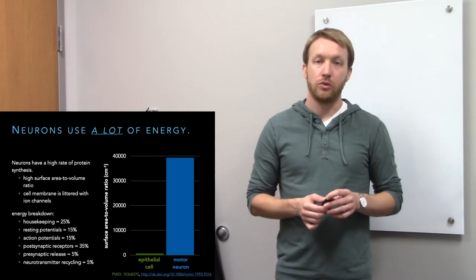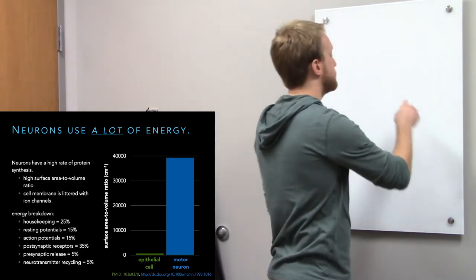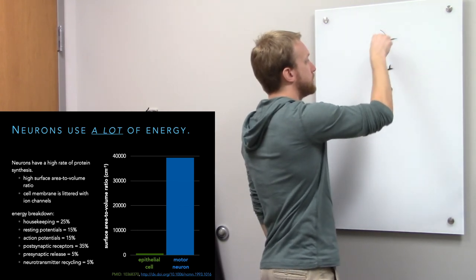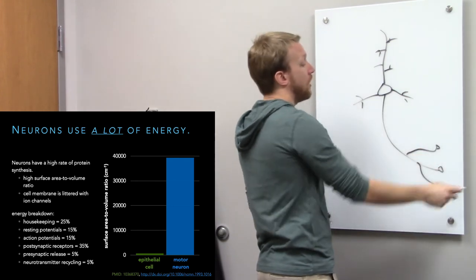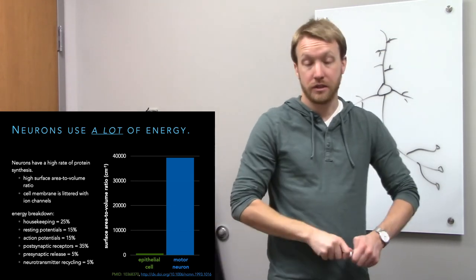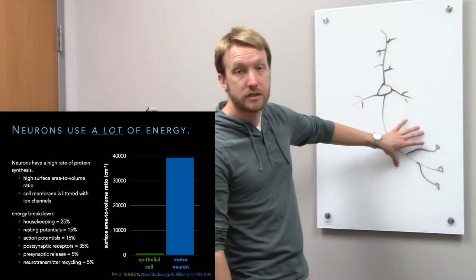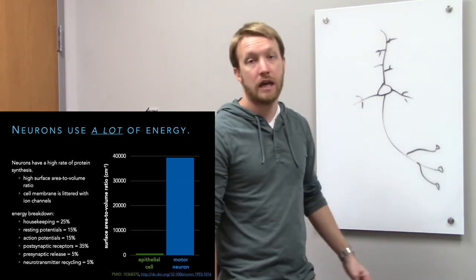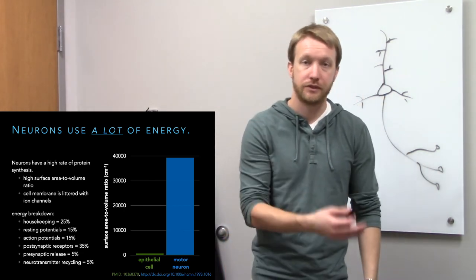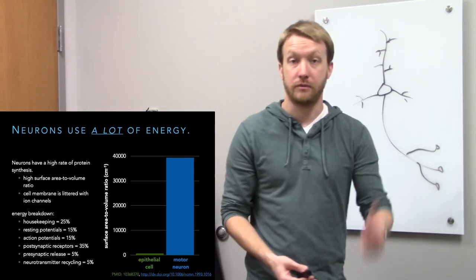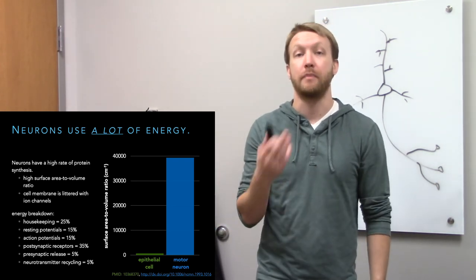Neurons are so greedy with their energy because of their intricate morphologies. All those little extensions increase their surface area to volume ratio — all the branching, all the spines and dendrites, all the branching of the axon. All of that membrane is lined with proteins, and a lot of these are ion channels. So we're moving ions throughout essentially the entirety of the cell surface, except for myelinated regions of the axon. This high surface area to volume ratio means we have a lot of ion channels to build. Building proteins is not free, transporting proteins is not free, and moving the ions — even though those are passive gradients — is not free.